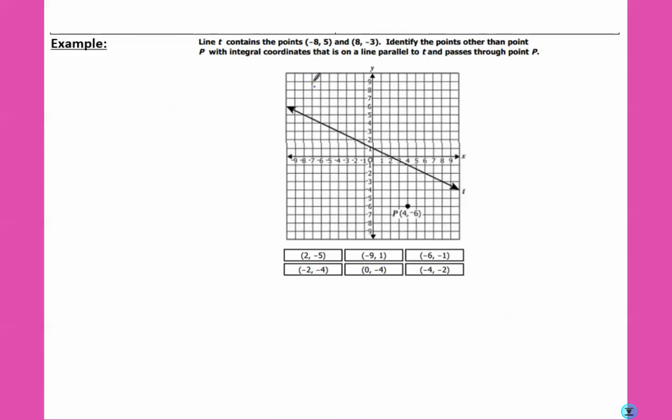Line T contain points negative 8, 5, and 5, negative 3. Identify the points other than the point P, which is right here, with integral coordinates. That just means no decimals, that is on a line parallel to T and passes through point P. So I'm going to start with my ruler.